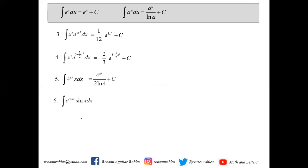We have the integral of e to the cosine of x times sine x dx. We know that the derivative of cosine x is negative sine x dx, and we only have sine x dx here. So we just multiply by negative 1, and we get negative e raised to cosine of x plus c.